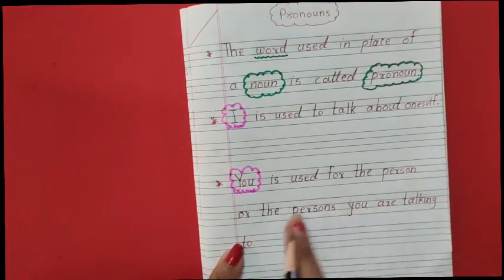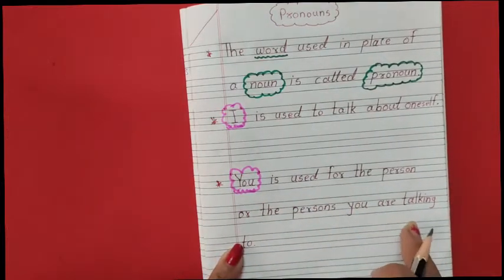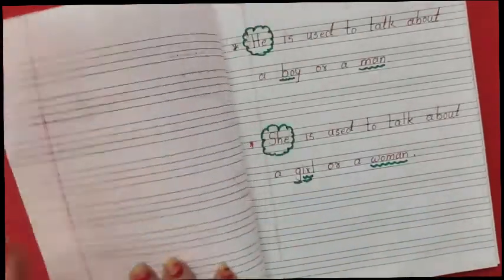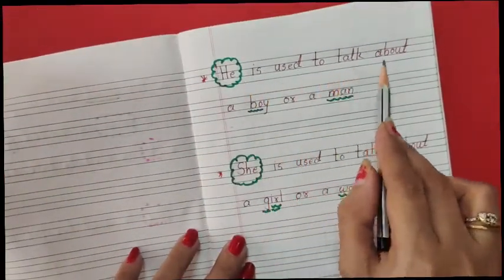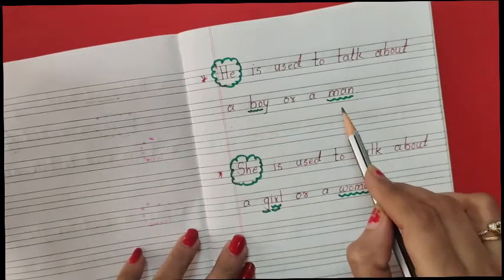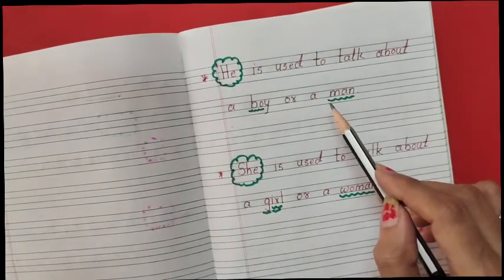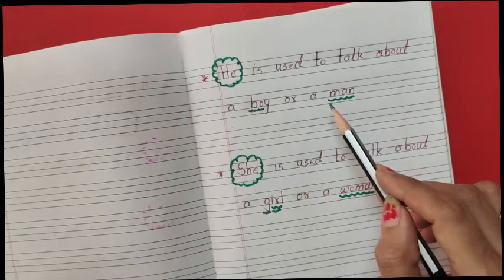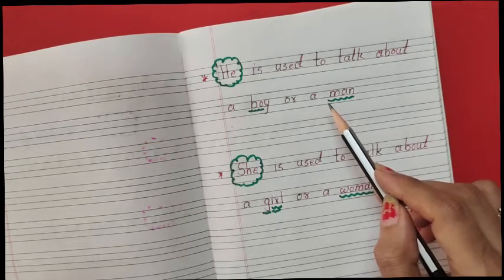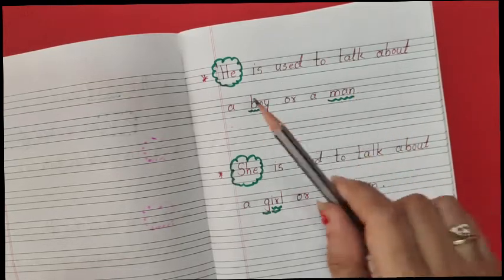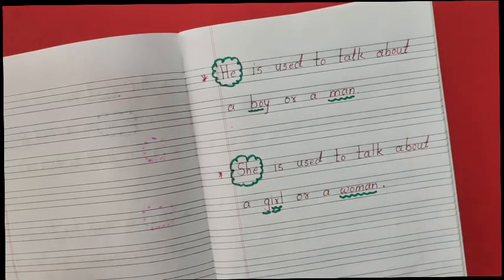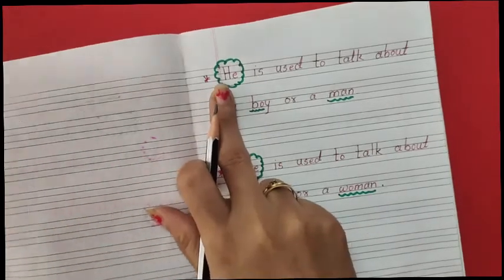Next is he. He is used to talk about a boy or a man. For example, Raju is a good boy. He wants to sit in the class. For all boys and men, we can use he.